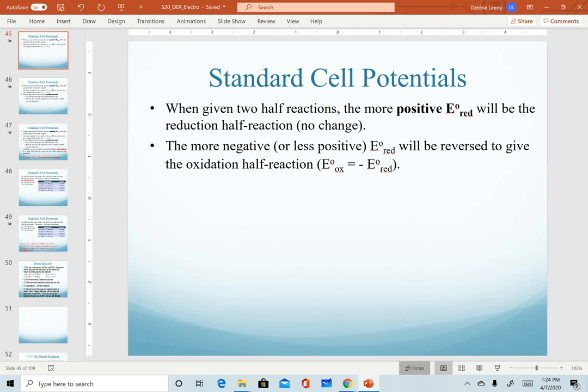The shortcut version of all of that is that when we are given two half reactions, the more positive reduction potential, E°_red, will remain as the reduction half reaction.